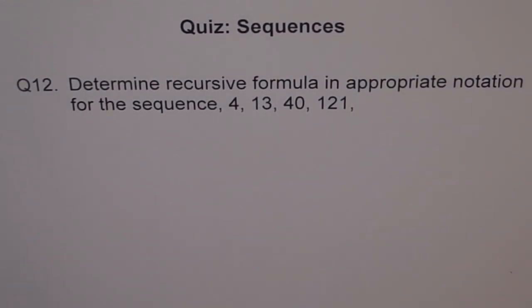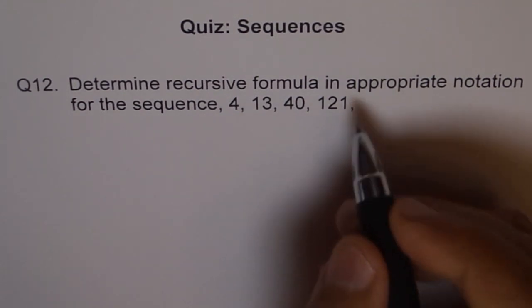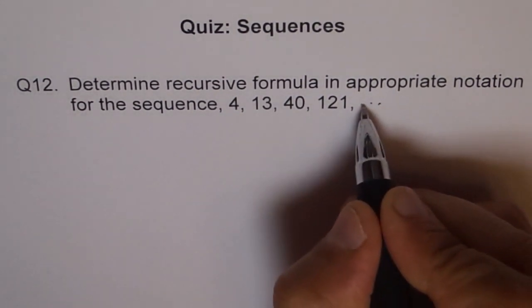Question 12 of sequences. It says, determine recursive formula in appropriate notation for the sequence 4, 13, 40, 121 and so on. Let's put three dots.